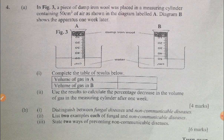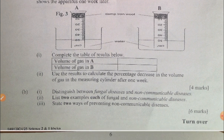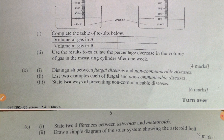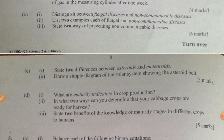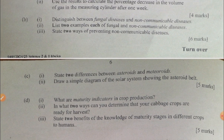Question 4a: a piece of damp iron wool was placed in a measuring cylinder containing 50 cm³ of air, as shown in the diagram. You are supposed to complete the table with your results. Question 4b: distinguish between fungal diseases and non-communicable diseases, give two examples of each, and state two ways of preventing non-communicable diseases. Question 4c: state two differences between asteroids and meteorites and draw a diagram of the solar system showing the asteroid belt. Question 4d covers maturity indicators in crop production and ways to determine that cabbage is ready for harvest.